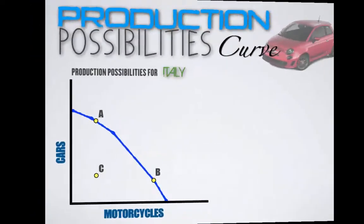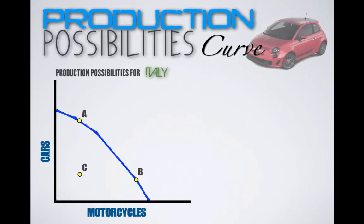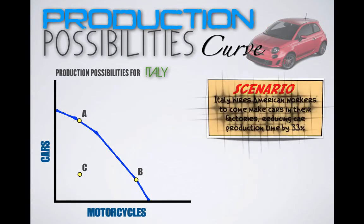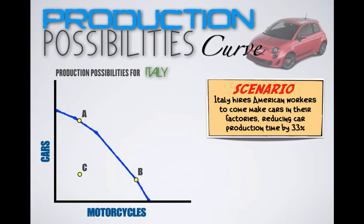In our next scenario, a production possibilities curve for Italy is provided. Let's say that Italy hires American workers to come make cars in their factories, reducing car production time by 33%. Italy is gaining resources in the form of American autoworkers, but these American workers are only working in factories making cars, not motorcycles. What this means is that Italy's ability to produce motorcycles will not change, but its ability to produce cars will increase, and so the PPC will shift outward towards cars only.